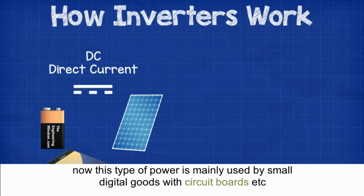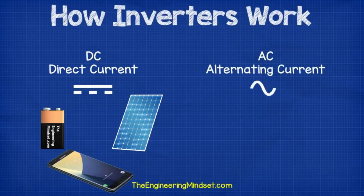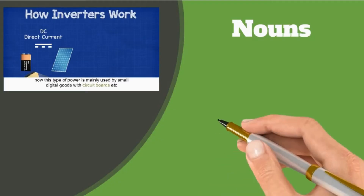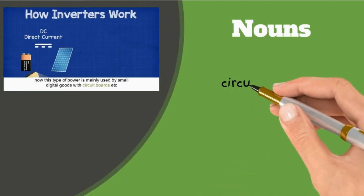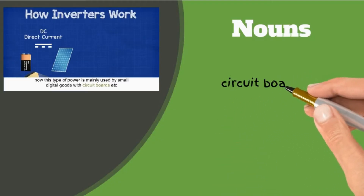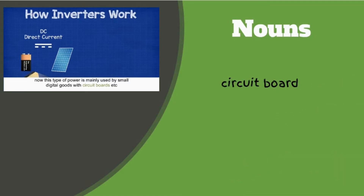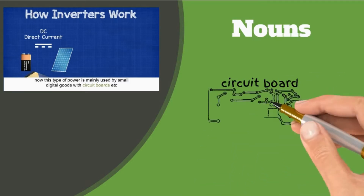Now this type of power is mainly used by small digital goods with circuit boards, etc. Circuit board: used to carry electrical energy.